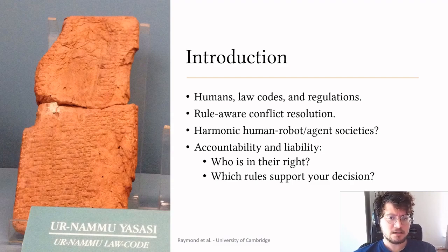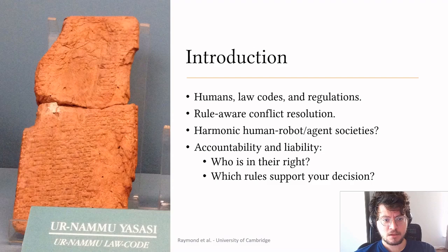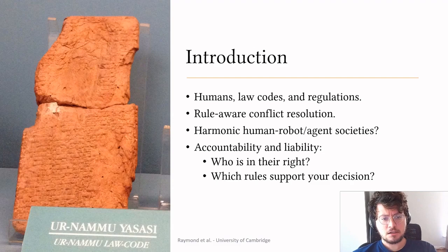To this day, societies are established with laws, constitutions, sports rules, traffic codes and we are bound to abide by them. But what happens when human-robot or human-agent societies become a reality? The first question we pose is: can we establish an architecture to enable humans and agents to justify their actions based on the rules in order to provide accountability?